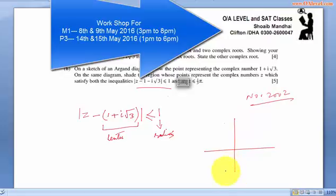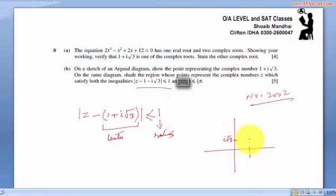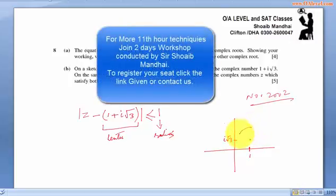The circle would be from point 1 plus i root 3 which is 1 in the real value and i root 3 on the imaginary axis. This would be our center and this would be our circle. You can also use the compass to make it very accurately with these values in root 3.